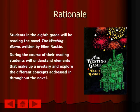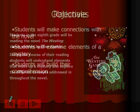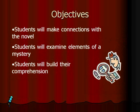The heir who solves the mystery will inherit Westing's $200 million fortune. The objectives for this unit are for students to make connections with the novel, examine elements of a mystery, and build comprehension.